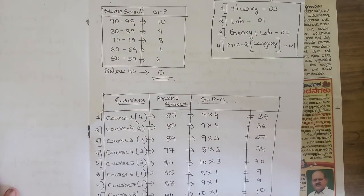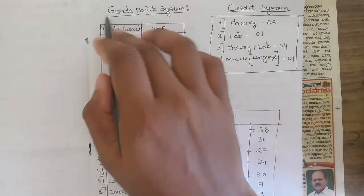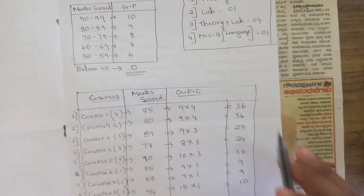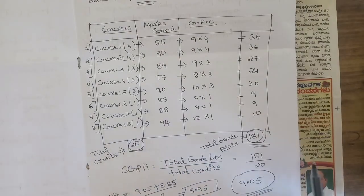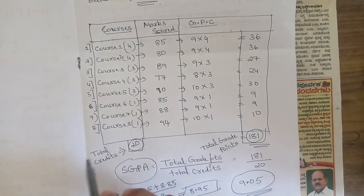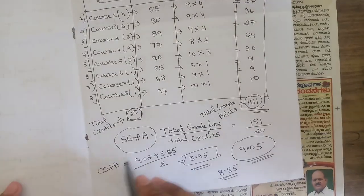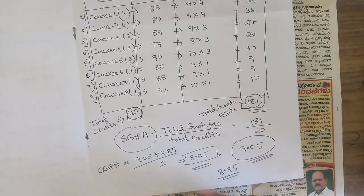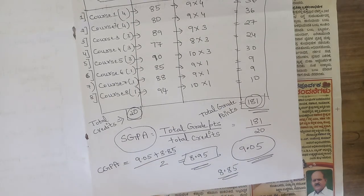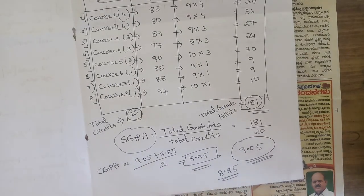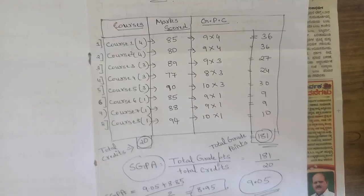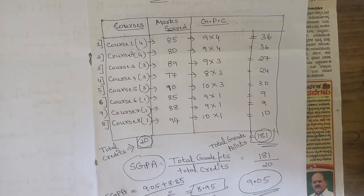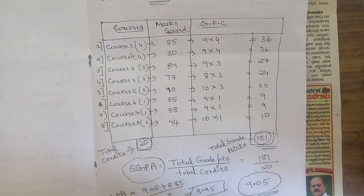To recap: you need to know the grade point system, the credit system (theory, lab, theory+lab, and language/MCQ), then use the random marks to calculate grade points per subject. SGPA = total grade points ÷ total credits. CGPA = sum of SGPAs across two semesters ÷ 2, which is essentially the mean of your two semester SGPAs. This method is common for all semesters and any course.